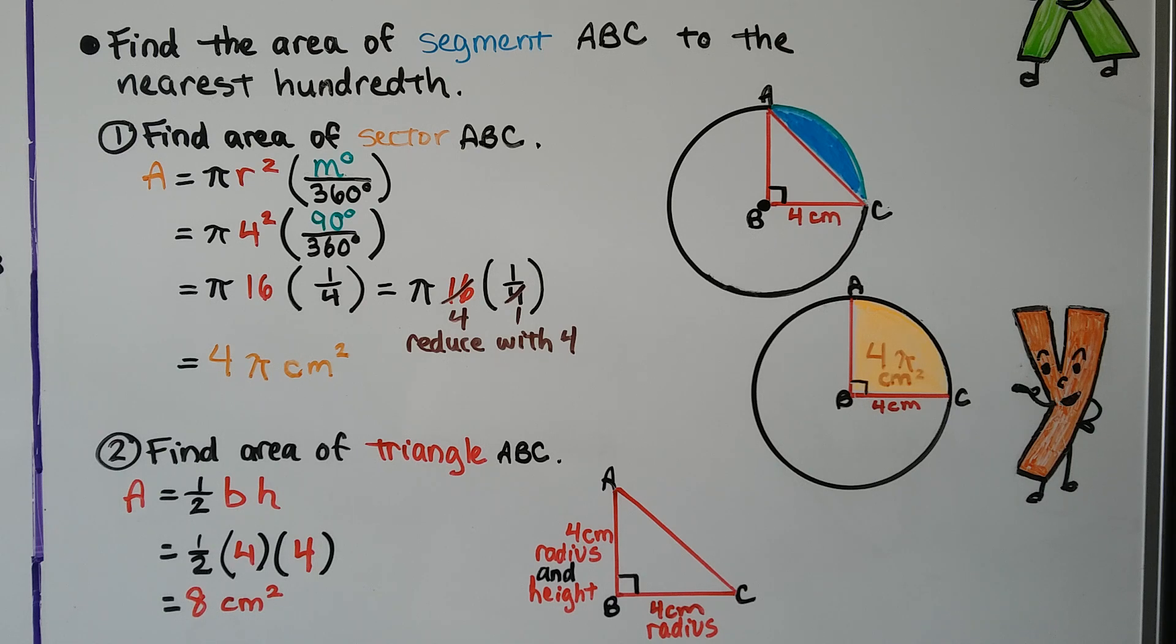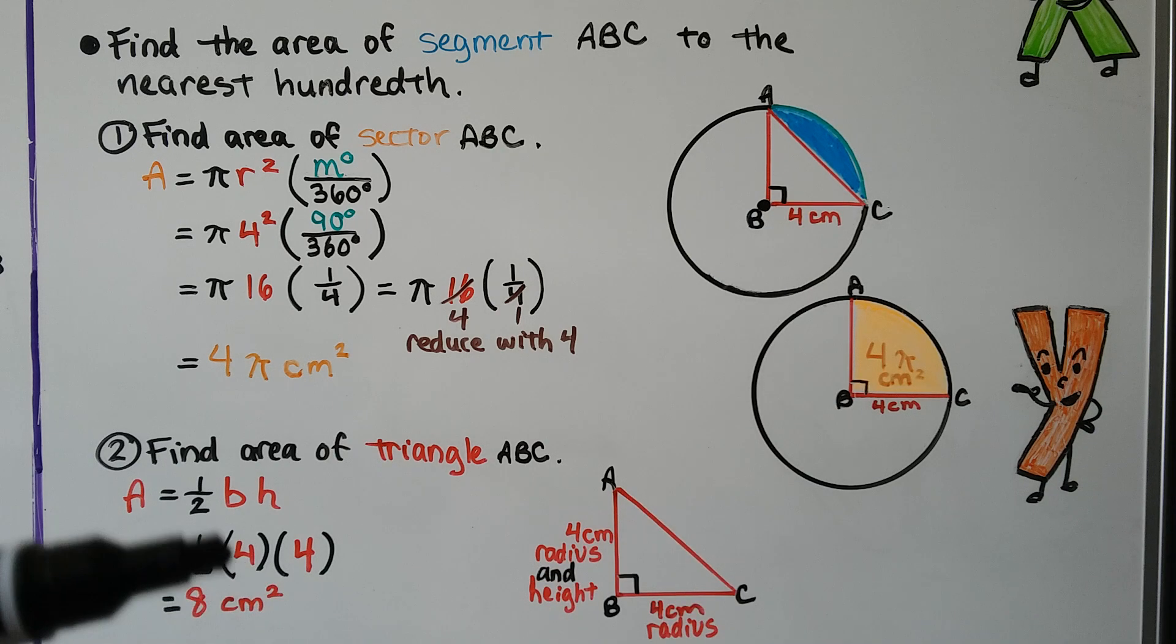Now we need to find the area of triangle ABC. We know that this is 4 centimeters. And this is the radius and the height. That's 4 centimeters. So half times base times height would be half times 4 times 4. That would be 8 centimeters squared. If we want to find the area of this sector, we just need to subtract this from this.